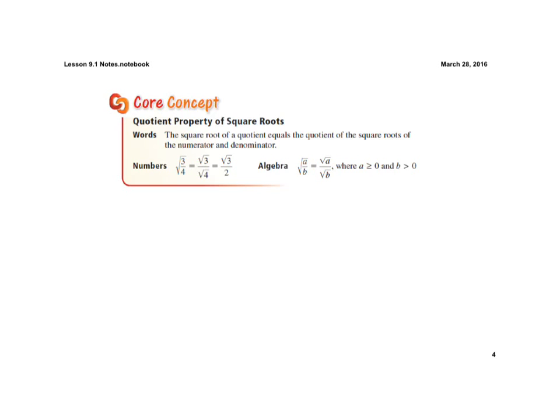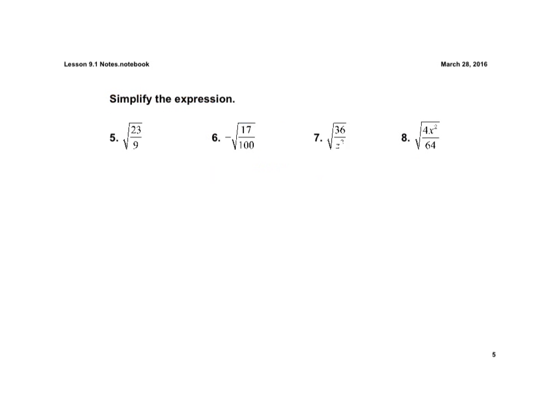One of the things you're going to learn about simplifying radicals is that a radical is in simplest radical form when two things are true. One, there's no perfect square number underneath the radical. And two, there's no radical in the denominator.